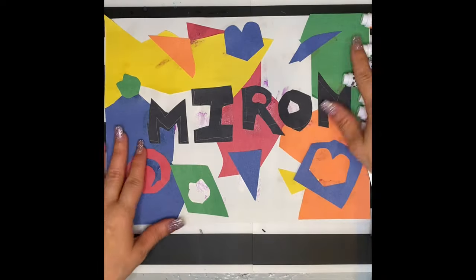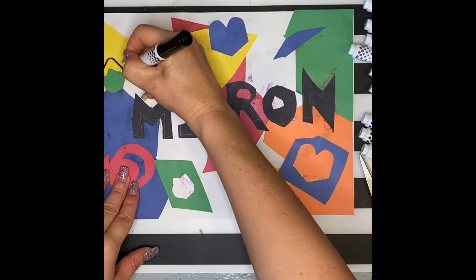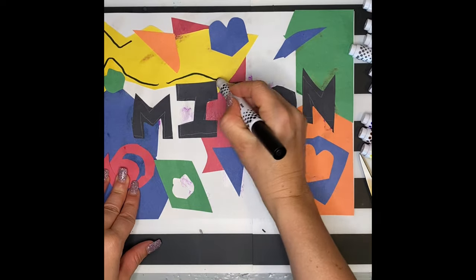Next, using some markers, I want to fill in some of the white spots around my picture. I'm going to take some black markers and outline my shapes.